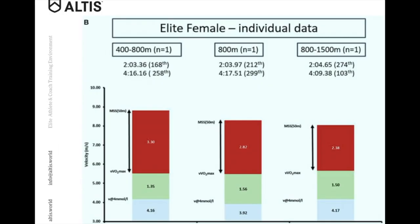Anaerobic speed reserve also allows us to gain a deeper insight into our individual athlete makeup. Here we are looking at some elite females, all with very similar 800-meter race times. But through the graph, we can start to understand where the intricacies lie — where their strengths and weaknesses may be. In the blue zone, we have velocity at 4 millimoles lactate, which can be thought of as equivalent to a half marathon pace. The green zone is velocity of VO2 max, about a 2K pace. And then we have maximal sprint speed in the red. Despite a very similar outcome from the three athletes, they achieve it with very different strengths and weaknesses.